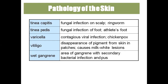Varicella is a viral infection also called chickenpox. Vitiligo is disappearance of pigment from the skin — you can see milky white lesions all over the body. Wet gangrene is gangrene that contains pus; if there is no pus, it is dry gangrene.